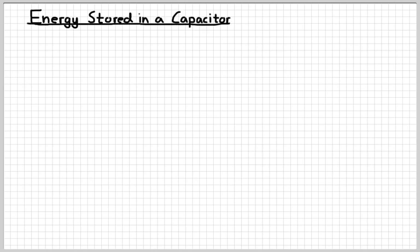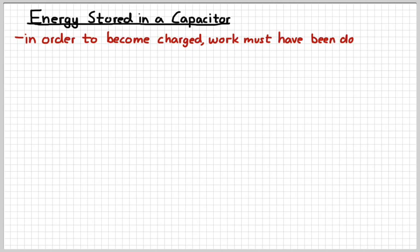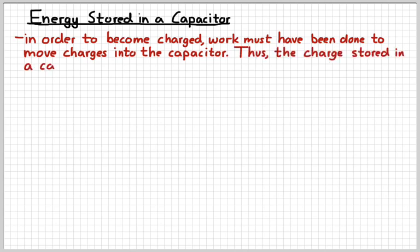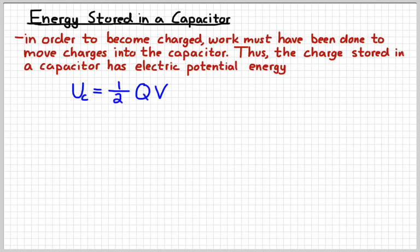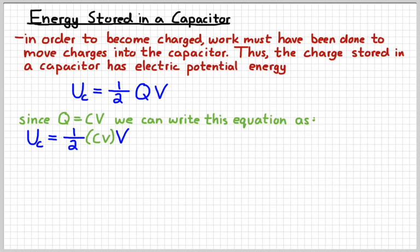So because a capacitor stores charge, and in order to make those charges move into the capacitor, work has to be done on them, then a capacitor must store energy. It stores electrical potential energy. So the equation that gives us the electric potential energy, which I'm not going to take the time to derive, is simply one half Q times V. Q being the charge on the capacitor, V being the voltage across the capacitor.